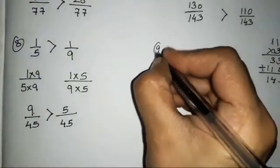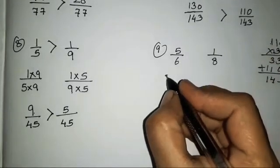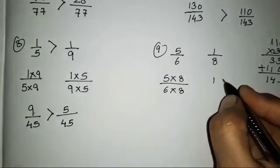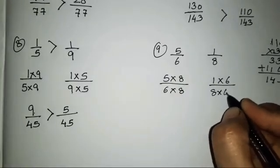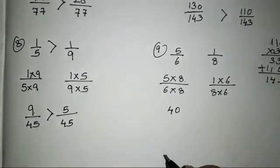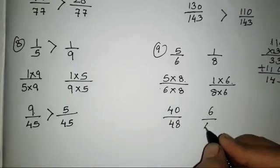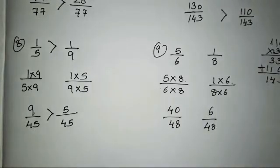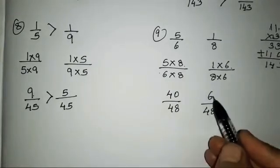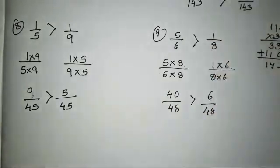The ninth sum is 5 upon 6 and 1 upon 8. So 5 into 8 over 6 into 8, and 1 into 6 over 8 into 6. That gives 40 upon 48 and 6 upon 48. The denominators are equal. Which numerator is greater? 40 is obviously greater, so this fraction — 5/6 — is greater.